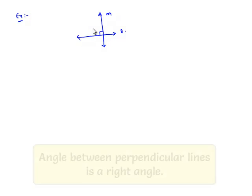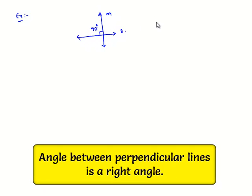Considering an example, let us assume two lines, line L and line M, such that the angle between them is 90 degrees. Then L and M are said to be perpendicular lines.